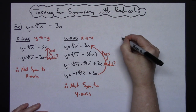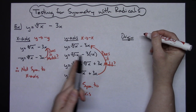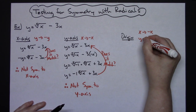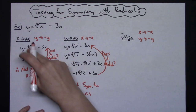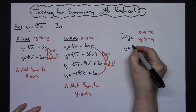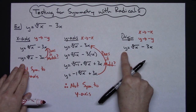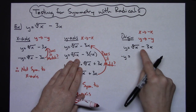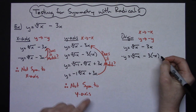The last thing to test is symmetry around the origin. To do this, replace every x with negative x and every y with negative y simultaneously. Starting with the original equation y equals the fifth root of x minus 3x: substituting in gives us negative y equals the fifth root of negative x minus 3 times negative x.